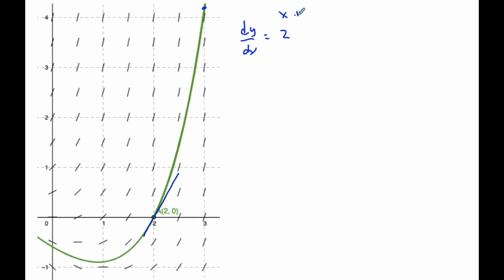He found the equation of the line, which was y minus 0 equals 2(x minus 2), which ended up being y equals 2x minus 4. So that was the line here.